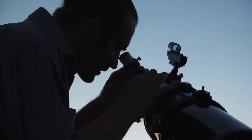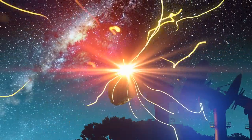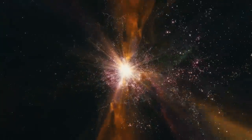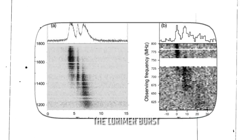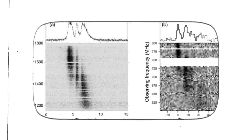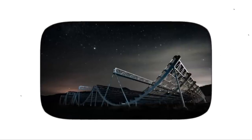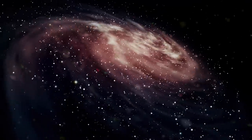At the time of its discovery, the nature and origin of the Lorimer Burst were not well understood. It was initially thought to be caused by a terrestrial or instrumental source, but subsequent observations and analyses ruled out those possibilities. Today, the Lorimer Burst is recognized as the first known example of a fast radio burst, FRB, a class of high-energy astrophysical phenomenon that continues to intrigue astronomers and astrophysicists to this day.